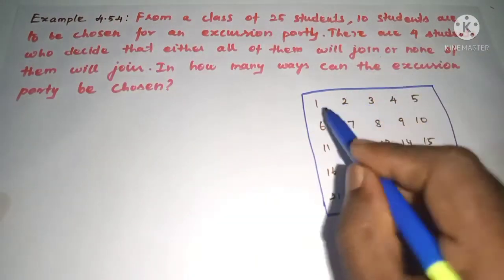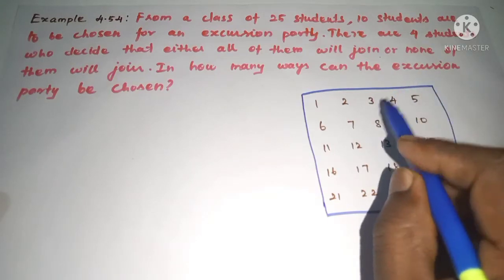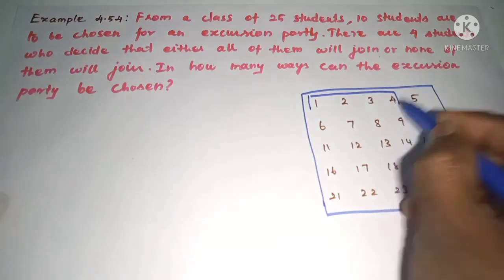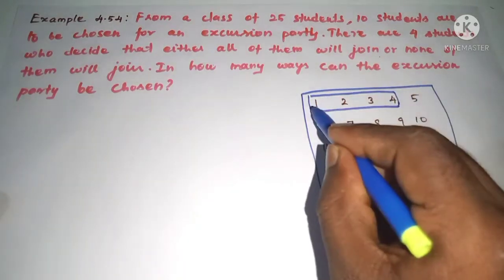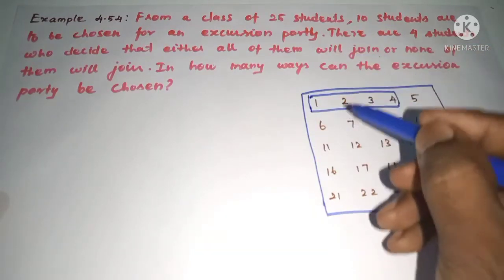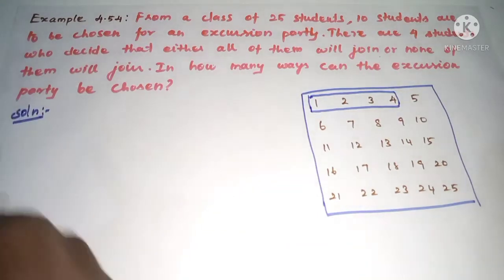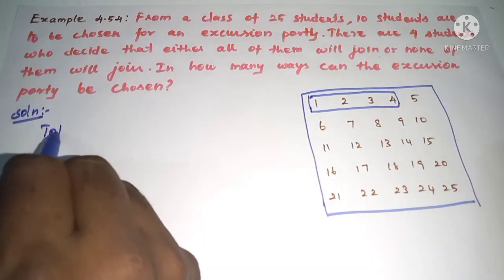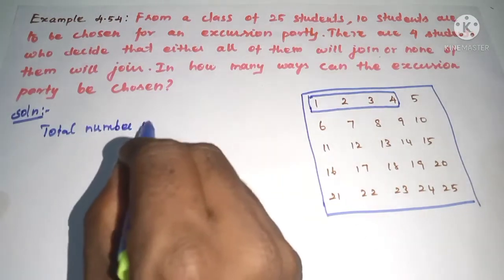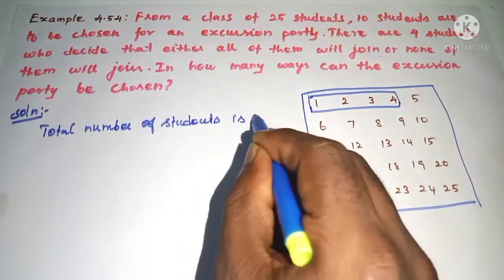To solve this, since we are choosing students for the excursion party, we will use combination. We will first consider the four special students. The total number of students is 25.